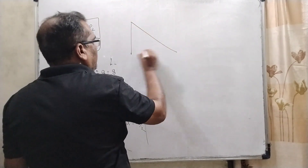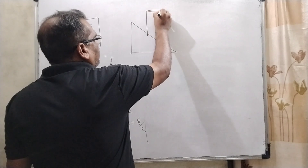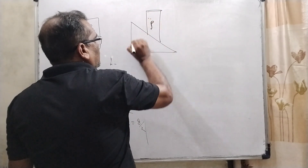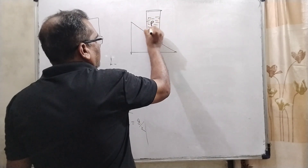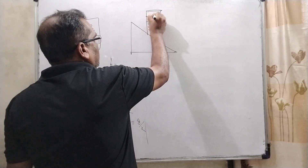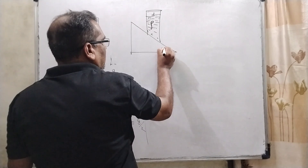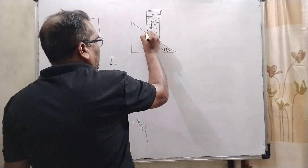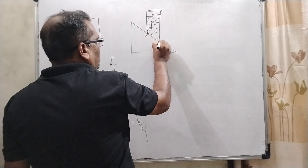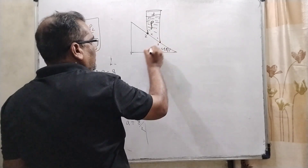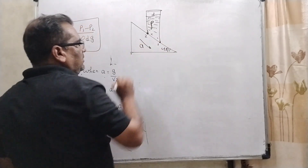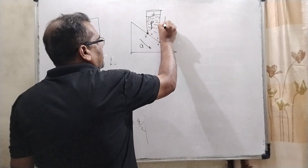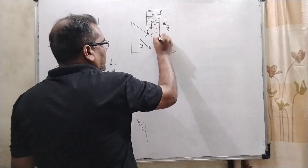Here we have an inclined plane and a liquid-filled tube with density rho. The diameter of this tube is small d, making an angle of 45 degrees with the base. The upper point is labeled 2, the lower point is labeled 1, and the tube is sliding downward with acceleration a.